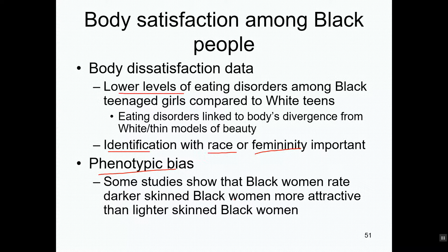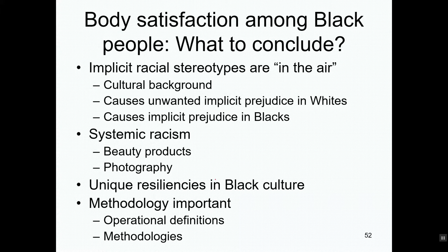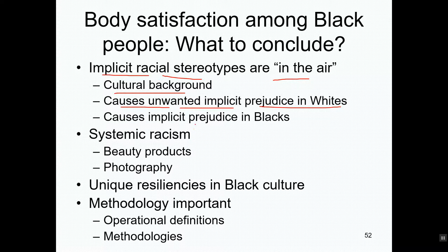We're starting to see that there's an effect of systemic racism on black people as they grow up, which makes them value black bodies less than white bodies. But there's also some resiliency or strength in the American Black community that protects them from much of this damage — something that is probably evolving right now. Implicit racial stereotypes are in the air, in our cultural background, and they cause unwanted implicit prejudice in white people, including high unconscious racism alongside low conscious racism.